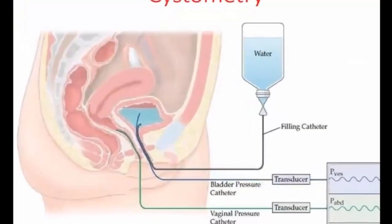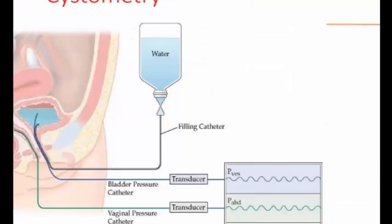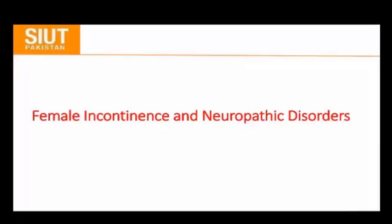This is the urodynamic system. You can see a filling catheter and a bladder pressure catheter placed in the bladder with transducers attached; results are shown in the form of graphs showing bladder pressure, urethral pressure, and abdominal pressure. Until now we have discussed the mechanism, types of conditions, physiology of continence, and now we will discuss neuropathic disorders.